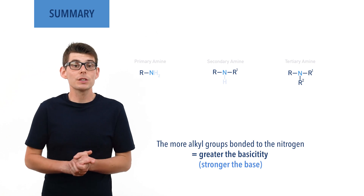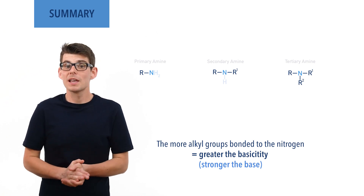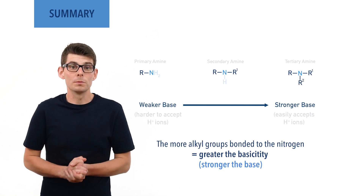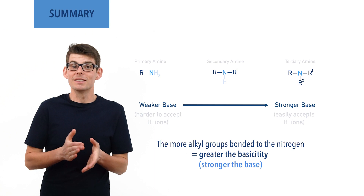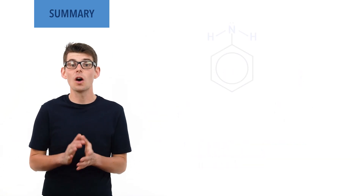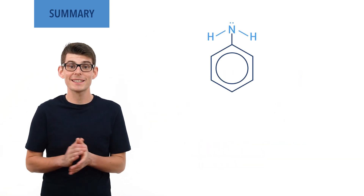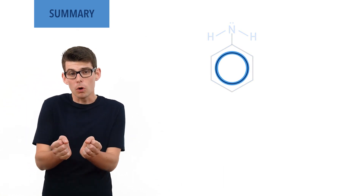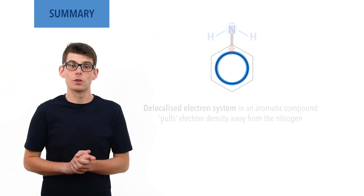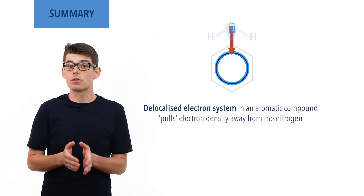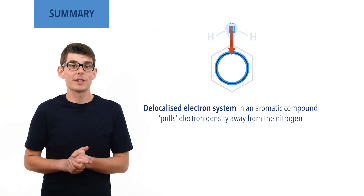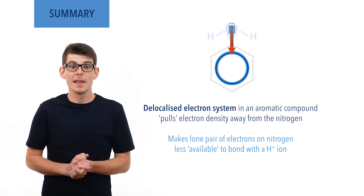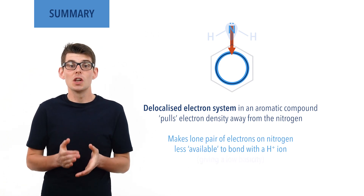As a result, secondary amines with two alkyl groups have a higher basicity than primary amines, and tertiary amines with three alkyl groups have a higher basicity than secondary amines. Aromatic amines are weaker bases than ammonia and aliphatic amines, as the aromatic ring bonded to the nitrogen atom pulls electron density away from the nitrogen, and as a result nitrogen's lone pair of electrons become less available for a H+ ion to bond with, giving aromatic amines low basicities.